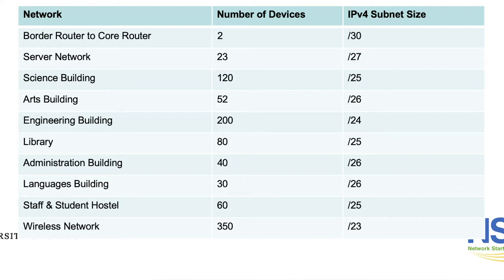For the arts building you have 52 devices and you're going to use a /26 prefix. Remember a /26 will give you 64 IP addresses. For the engineering building you have 200 devices and we're using a /24 prefix which will give you 256 IP addresses. For the library you're going to have 80 devices, in which case we're using a /25 which will give you a possible 128 devices on that network.